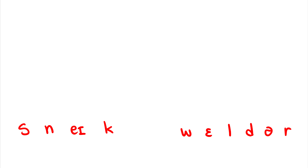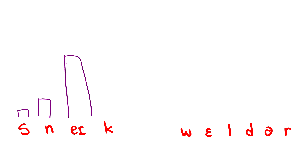Snake: S is an obstruent and has a sonority of 1. N is a nasal and has a sonority of 2. A is a vowel and has a sonority of 5, so we can draw it pretty high. And K is an obstruent and has a sonority of 1. We notice that 'snake' is one syllable.